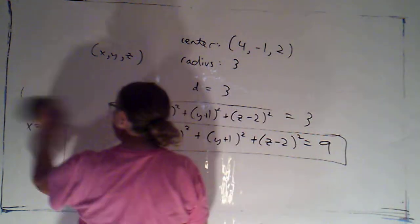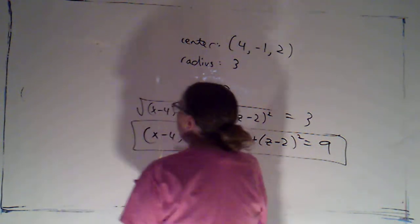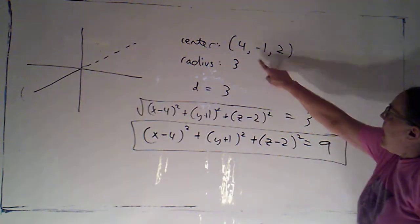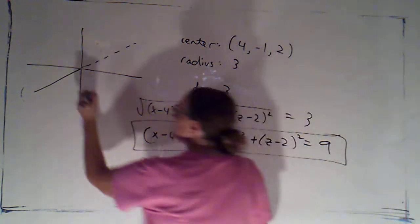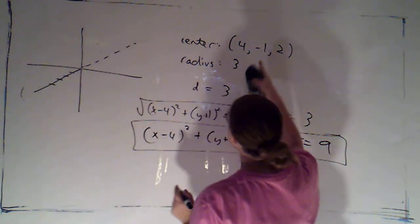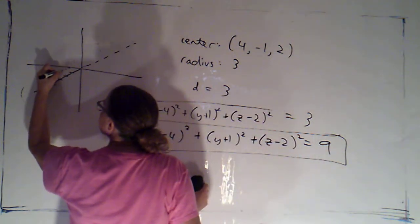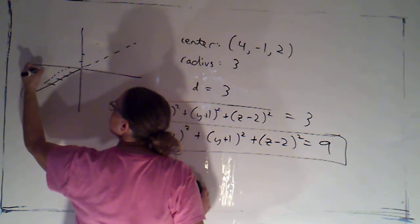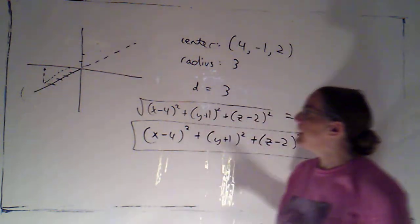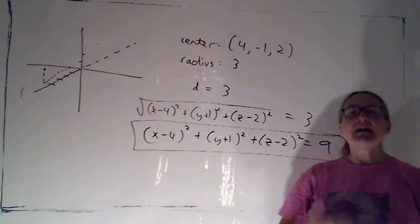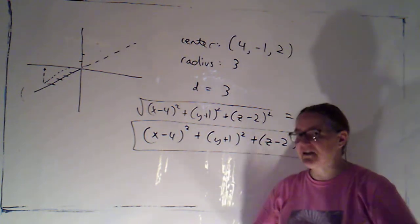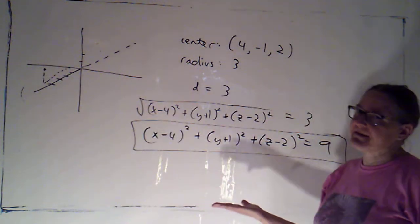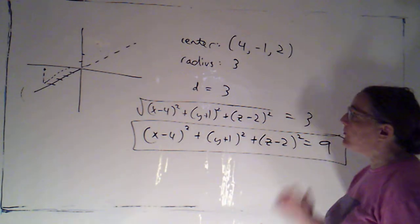Now, if I wanted to graph that, I'm going to try to start by plotting the center. So I'm going to come forward 4, to the left 1, and then up 2. So there's a distance of 2, I'm going to come up 2. So there's the center right there. Now, I'm actually going to plot that center point. That's not actually part of the sphere. It's just helpful for me in drawing the sphere. The sphere is all of the points whose distance to this point is 3. The distance from that point to itself is 0. So that's not a point on the sphere, but it's helpful for me in drawing the sphere.